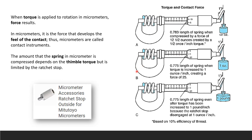The ratchet stop accessory limits the contact force. In this example, the spring is compressed to 0.783 inch by a force of 12.5 ounces, created by half-ounce per one-inch torque. Similar examples show readings going from 0.83 to 0.75 with varying forces from one ounce up to one pound.